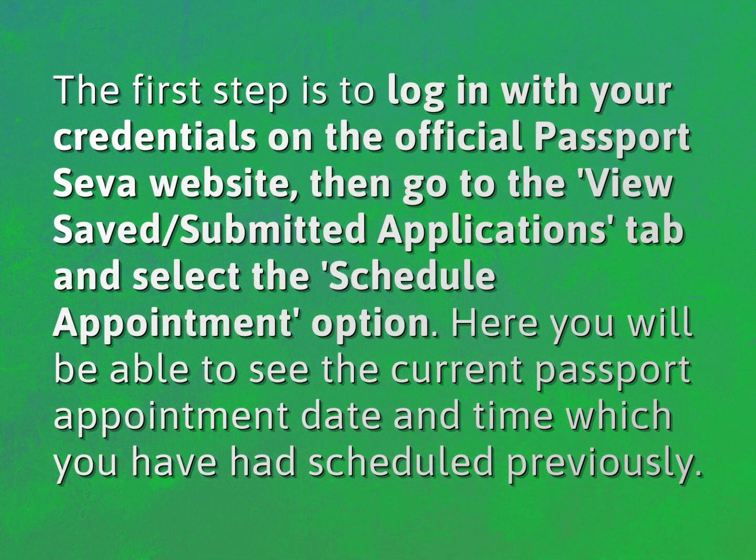The first step is to log in with your credentials on the official Passport SEVA website, then go to the View Saved/Submitted Applications tab and select the Schedule Appointment option. Here you will be able to see the current passport appointment date and time which you have had scheduled previously.